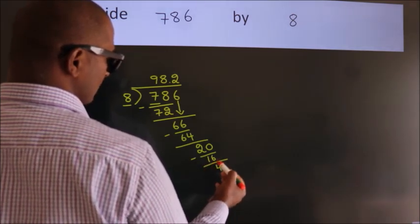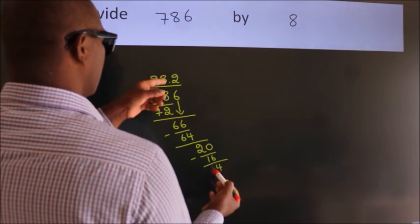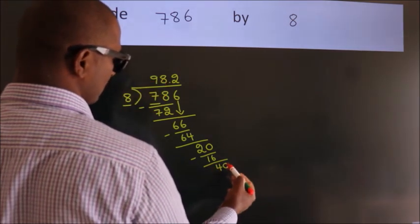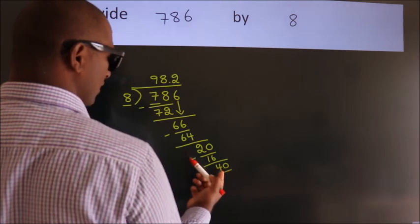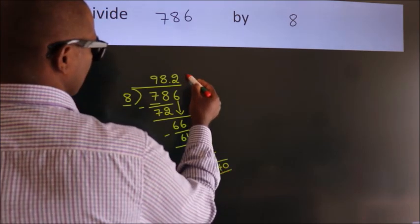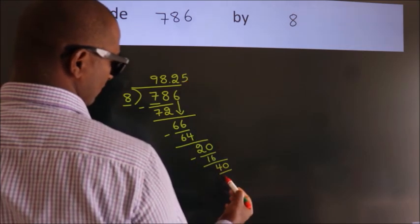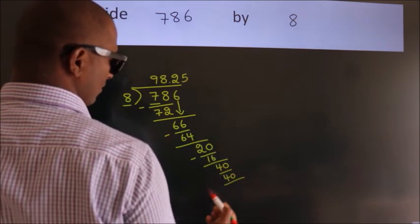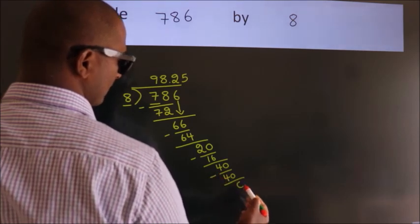After this, we already have the decimal, so directly take 0, giving us 40. When do we get 40 in the 8 table? 8 fives, 40. Now we subtract. We get 0.